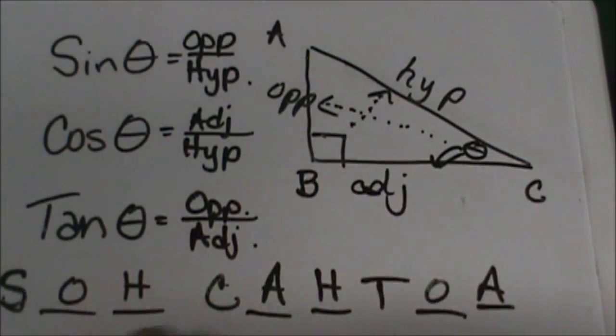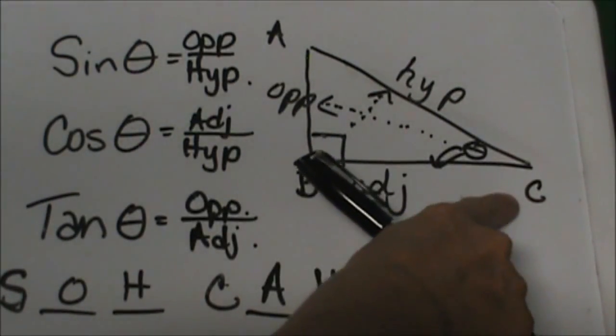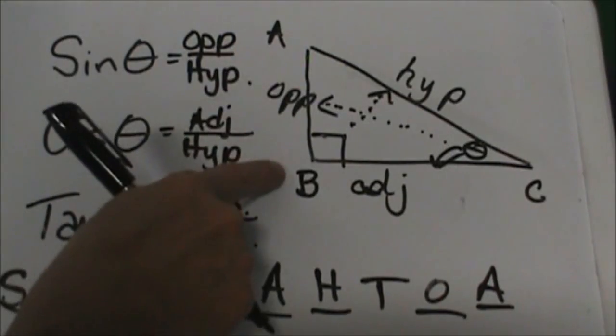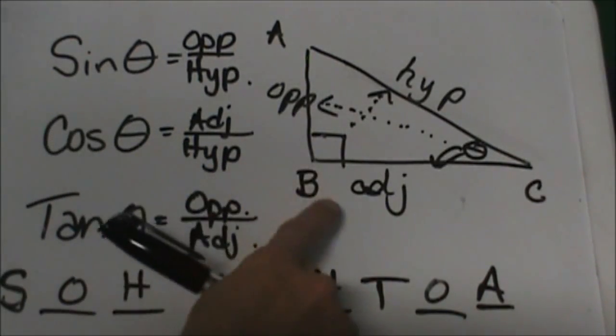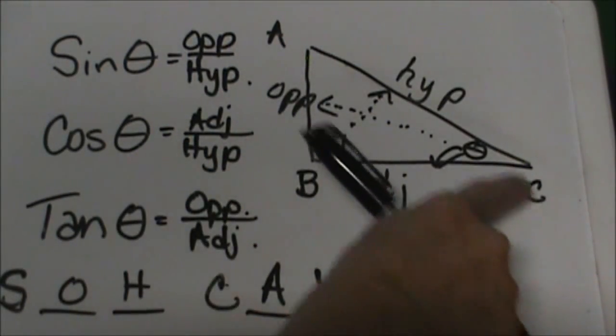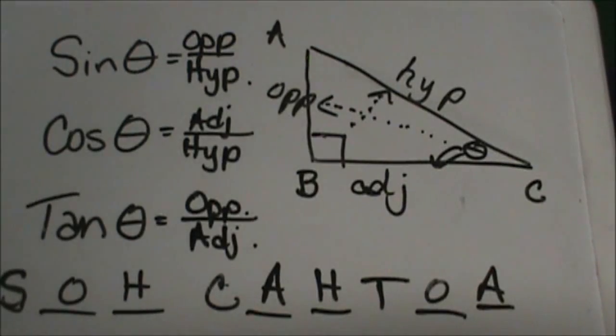It's the leg that forms the reference angle with the hypotenuse. So from angle C, this side AB is opposite, side BC is adjacent, and side AC is the hypotenuse.